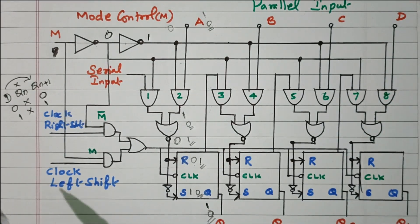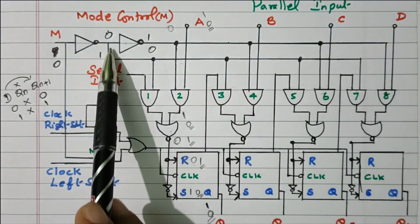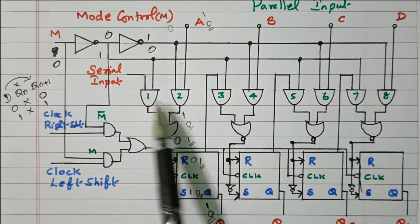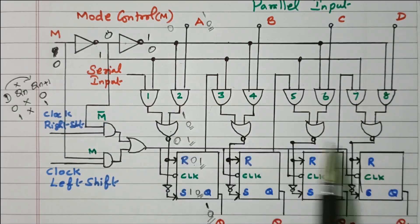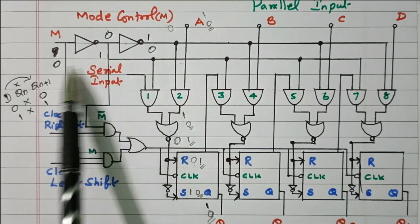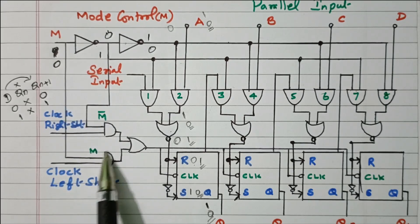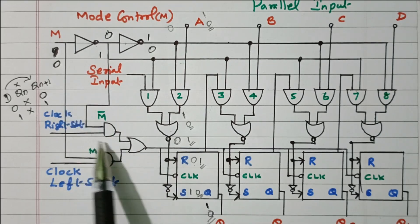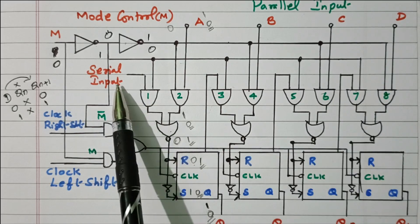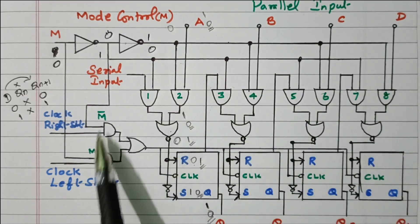If M equals 0, the upper line is totally disabled and the lower line is enabled. The lower line connects AND gates 1, 3, 5, and 7; AND gates 2, 4, 6, 8 are now disabled. Here we give the serial input. With M equal to 0, the NOT gate gives 1 on the lower line. If the serial input is given at the right-shift input, the right-shift operation is performed. If given at the left-shift input, the left-shift operation is performed. This is the clock pulse controlling for right and left shift.